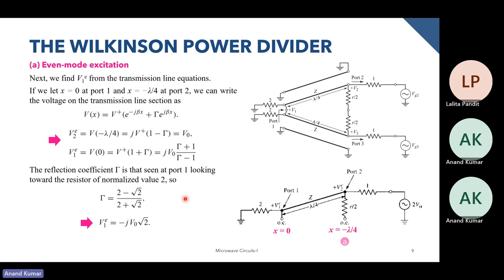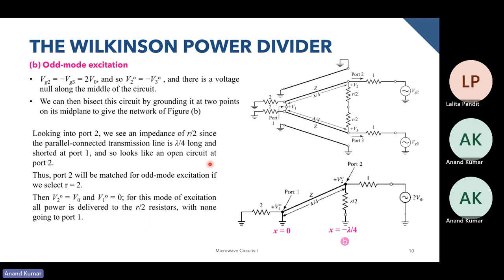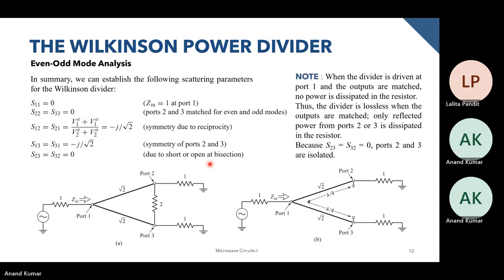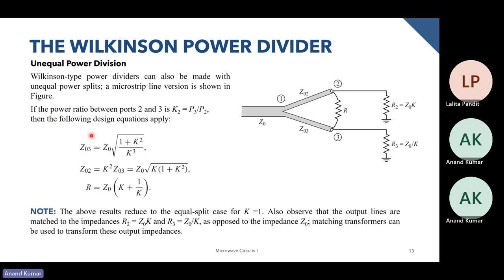We discussed all this mathematics in detail in the previous class. It is a number of steps which you have to do diligently, and if you do your due diligence you will end up with all the required values. Finally, the S-parameters for the Wilkinson power divider — once you have evaluated everything, we use the Z input values and the voltages at port one and port two for the even and odd conditions to get the S-parameters.